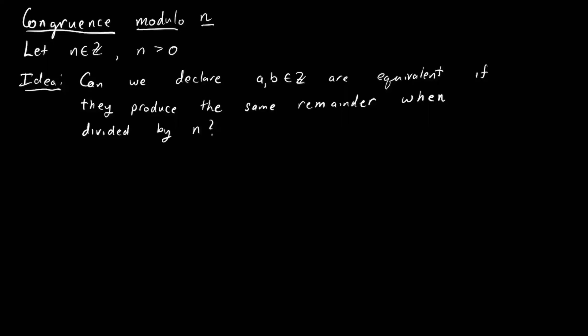Our goal in this video is to talk about congruence modulo n. We're going to fix a positive integer n and ask this question: can we declare two integers a and b to be equivalent if they produce the same remainder when we divide them by n?